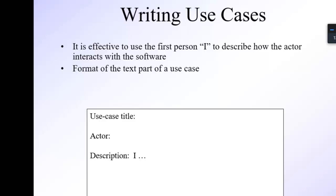In scenario-based modeling you have to write the use case text. You draw this boundary symbol and inside you write the use case title — which will be the name of your module. For example, the use case title could be 'reception' in a hospital project. After that you specify the actor — the actor would be the receptionist — and then the description of what is happening.